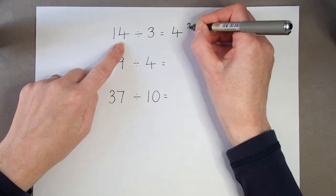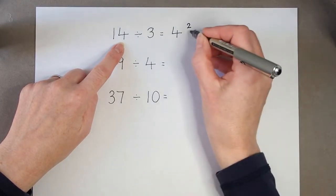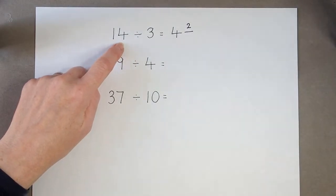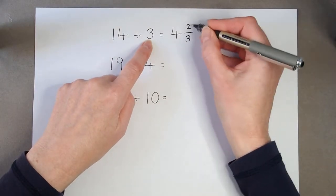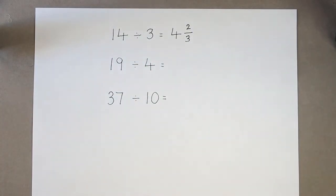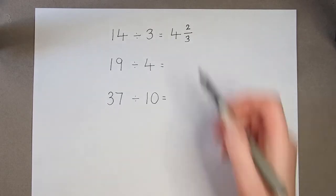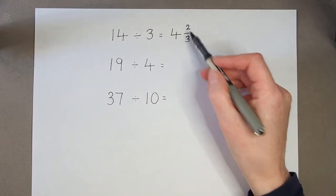So I'm going to put my remainder up here. I've got 2 left. But all together to make a group I needed 3. So I've got 2 of the 3 that I needed to make another group. 2 thirds. So 4 and 2 thirds.